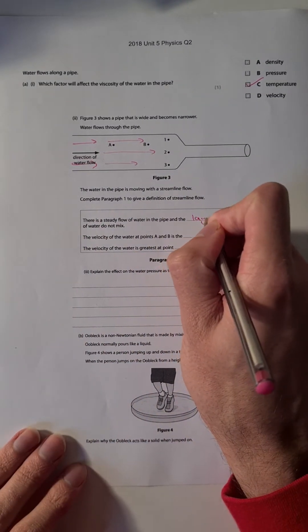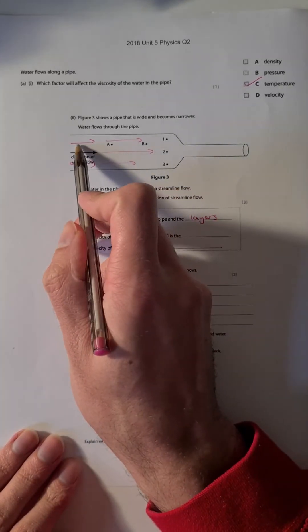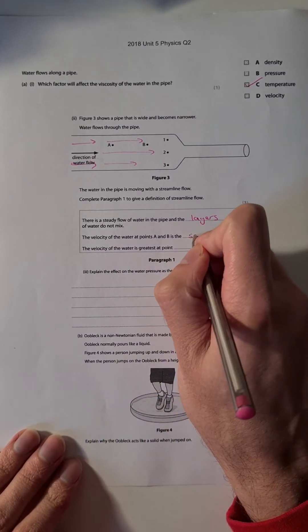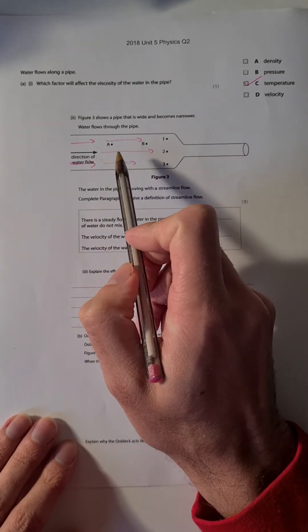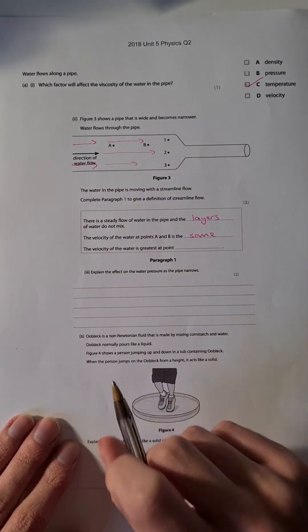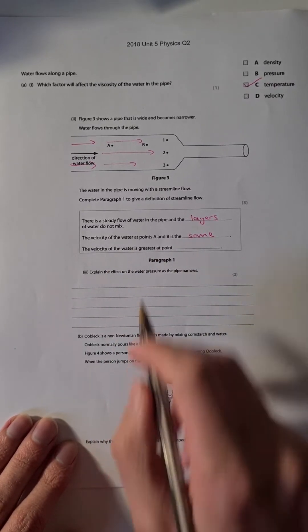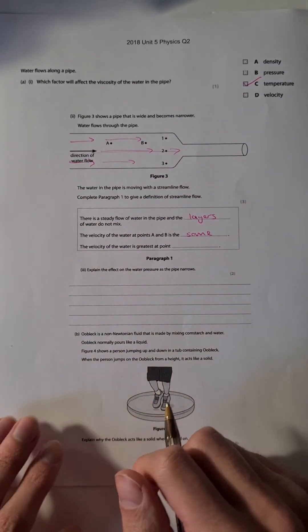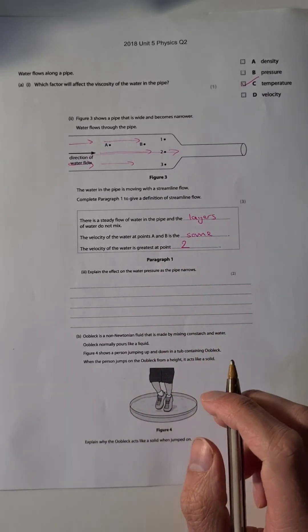The velocity of the water at points A and B - so this is the same kind of streamline layer, and everything will be moving at exactly the same speed. So it's the same in the same layer. They'll travel at the same speed. If we have different layers, we might start to see different speeds. And in fact, the next question is that the velocity of the water is greatest at point two, and that'll be the central point. Velocity will be greater, and as you get closer to the edge, you get slower and slower. So velocity of the water is greatest at point two, and that's three marks.